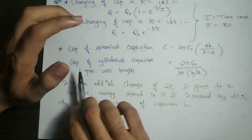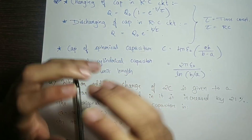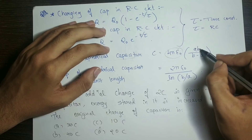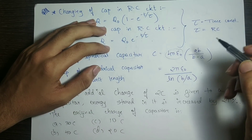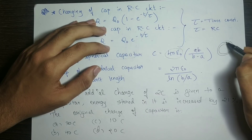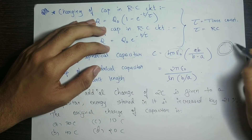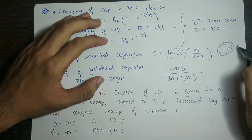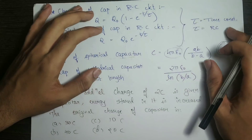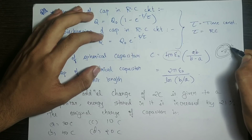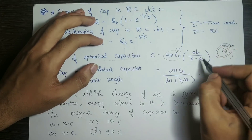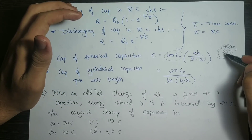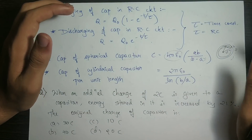Capacitance of a spherical capacitor: there is a spherical shell. C equals 4πε₀ times ab divided by (b minus a). One side is fully negative and the other fully positive. The outer radius is b and the inner radius is a, and since b is larger than a, b minus a gives a positive capacitance.